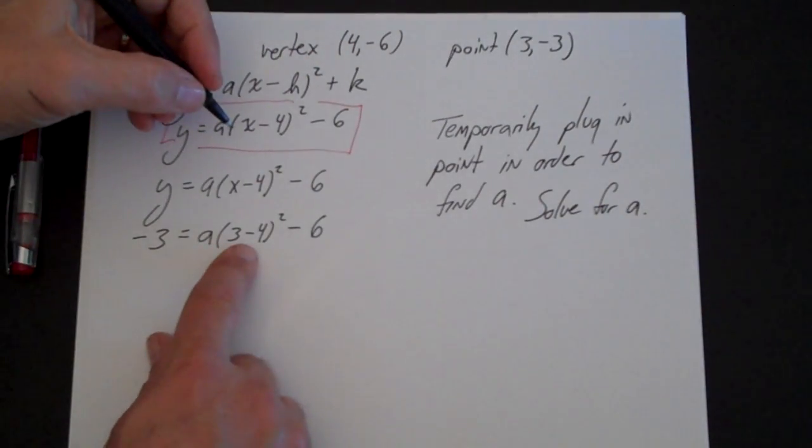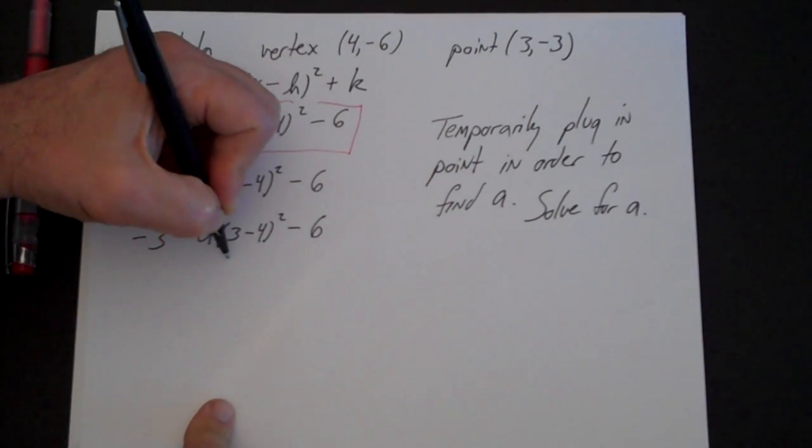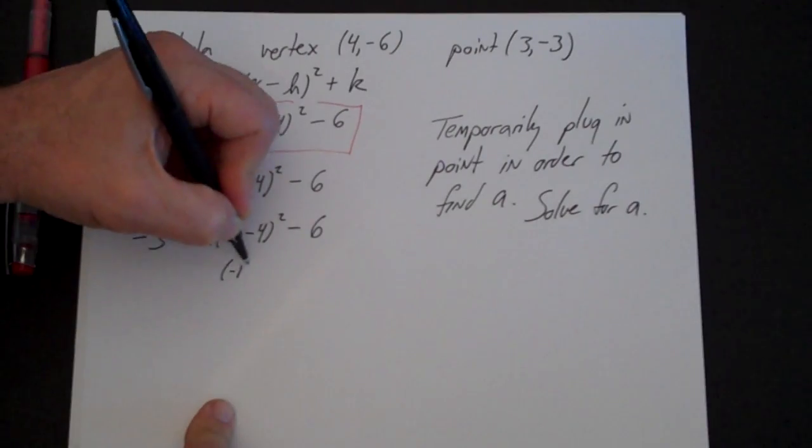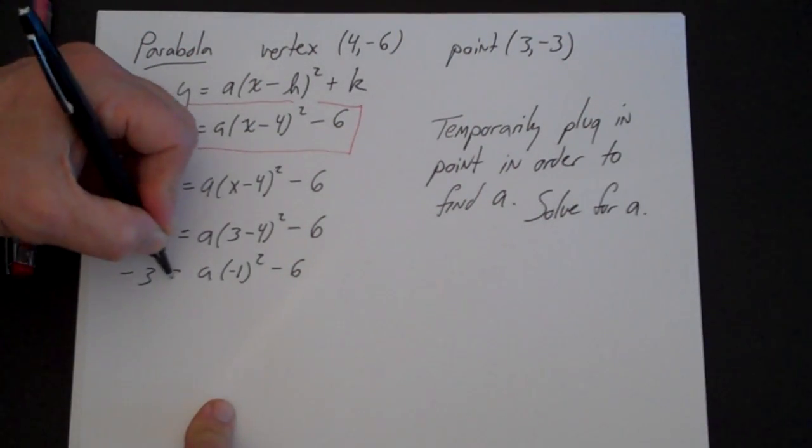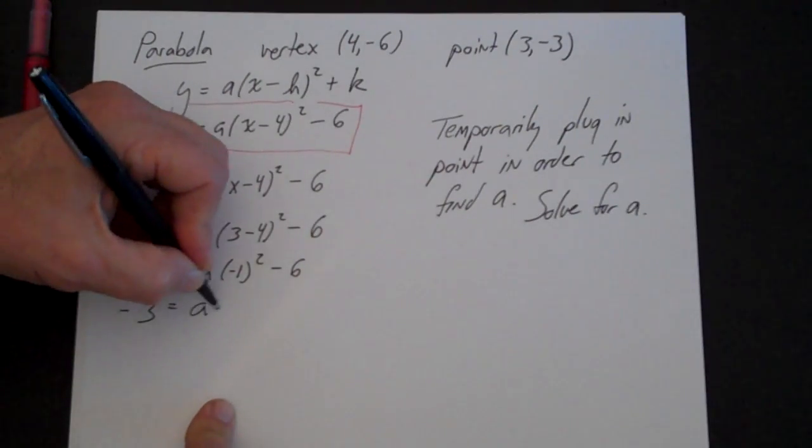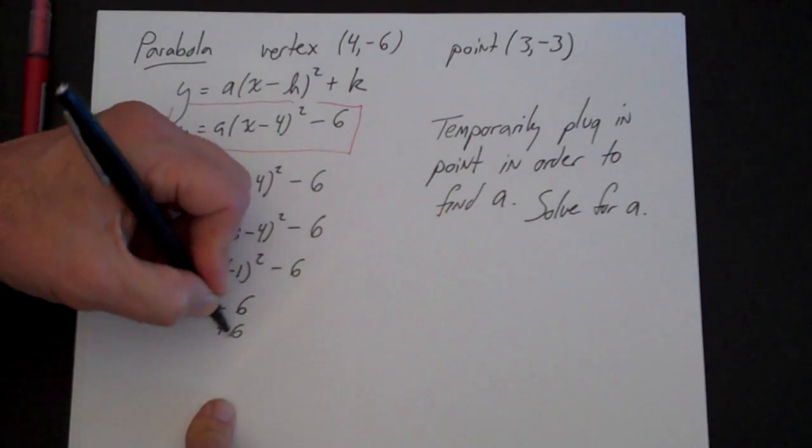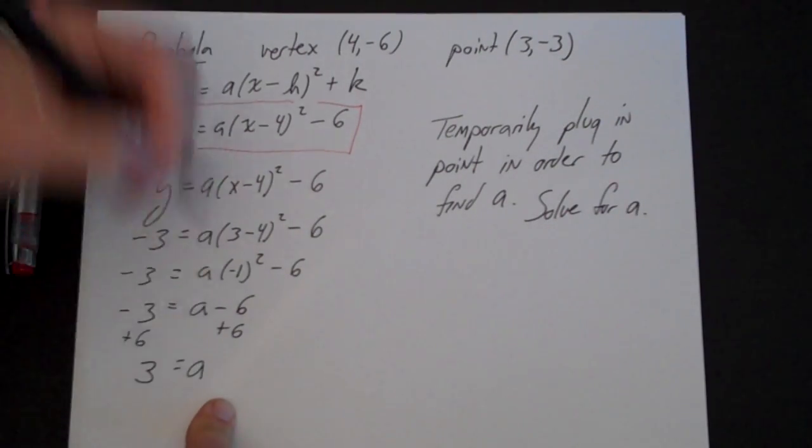So we need to do what is inside the parenthesis first. That's 3 - 4 is -1. -1 squared is simply going to be 1. So we have -3 = a - 6. We are going to add 6 to both sides, and a is going to be positive 3.